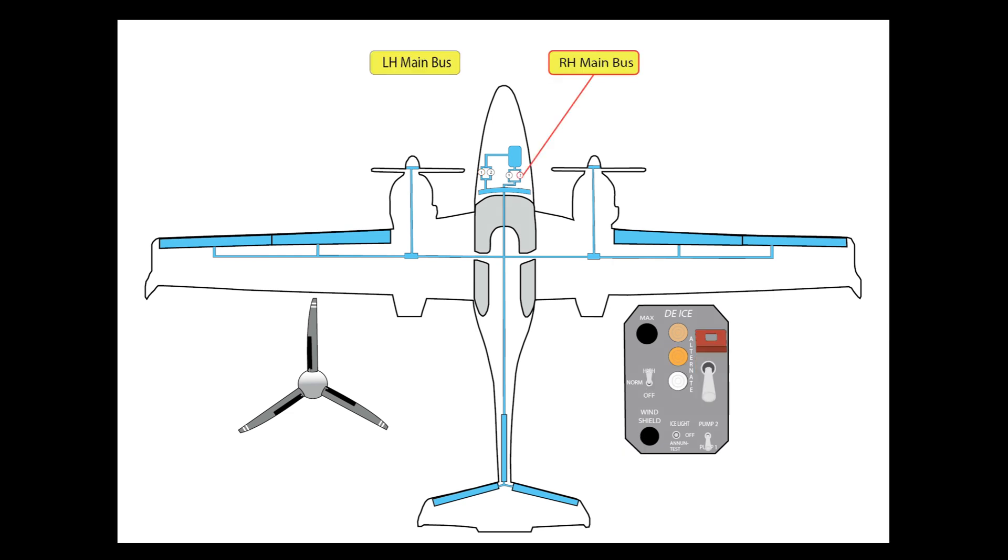Now the last thing I'm going to explain is this alternate switch here. You can see I've raised the guarded cover over it and moved the switch to the other position. The purpose of this is in case of some failure in the electrical system. Normally these pumps are connected with the left hand main bus. If I move this switch to the alternate position, it connects pump number two for the airframe and prop system directly to the right hand main bus. So in case this left one was failed, you could still have some de-icing capability. When you do that, it runs continuously in the high setting. So that pump, number two, is just running continuously as if you had set it to high.